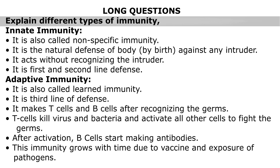Explain different types of immunity. Innate immunity: it is also called nonspecific immunity. It is the natural defense of the body, present by birth, against any intruder. It acts without recognizing the intruder. It is the first and second line of defense.